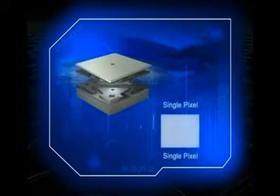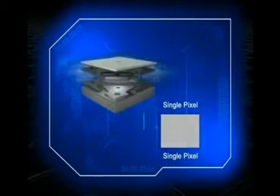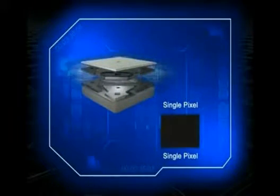When a mirror is tilted toward the light source, it reflects a single white pixel through a projection lens and onto a screen. Tilted away from the light, the mirror is switched off and its corresponding pixel space is dark.